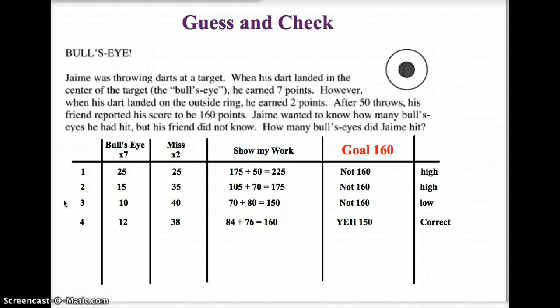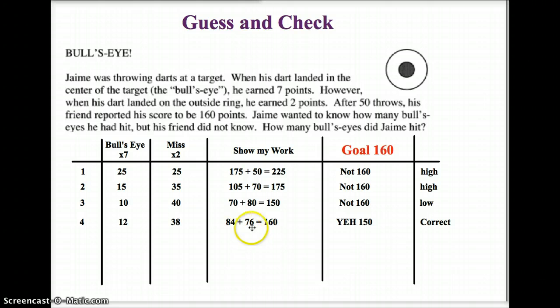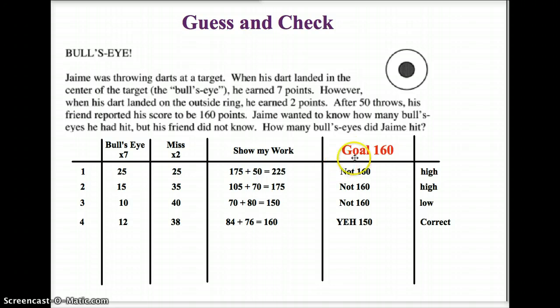A reasonable guess: 12 bullseyes and 38 misses. 12 times 7 is 84, and 38 times 2 is 76. When I add those together I get 160. 160 matches my goal of 160 — I got to the correct answer.